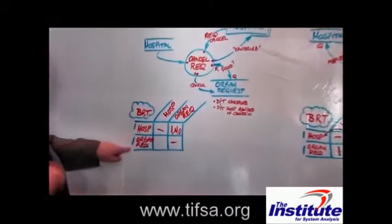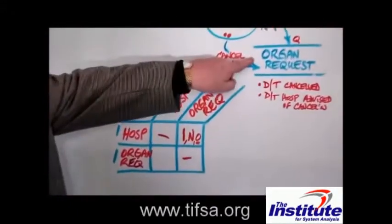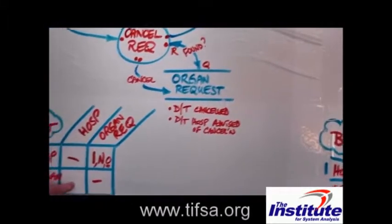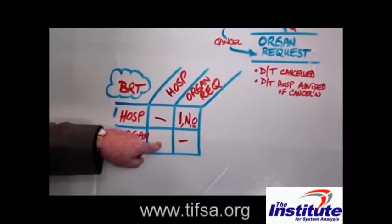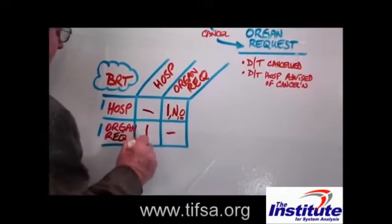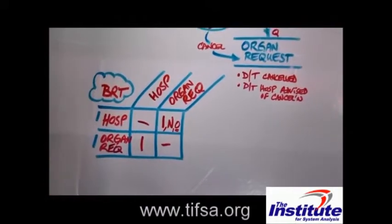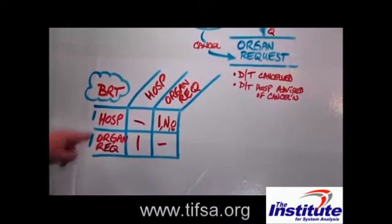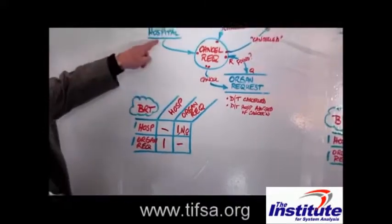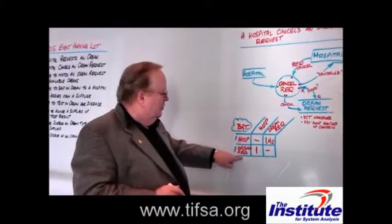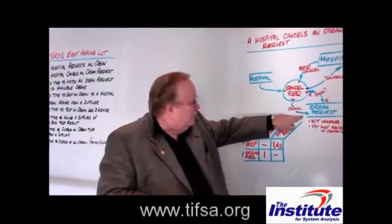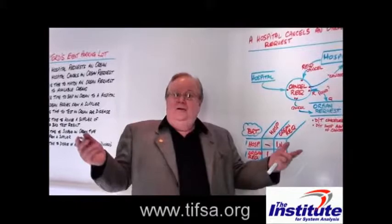For a single specific organ request, how many hospitals might cancel that request? Well, obviously just one. Several hospitals can't cancel it, and neither can none. So a single request can be canceled by a single hospital. We document that rule under the organ request object. And that's all there is to it — very straightforward in this case.